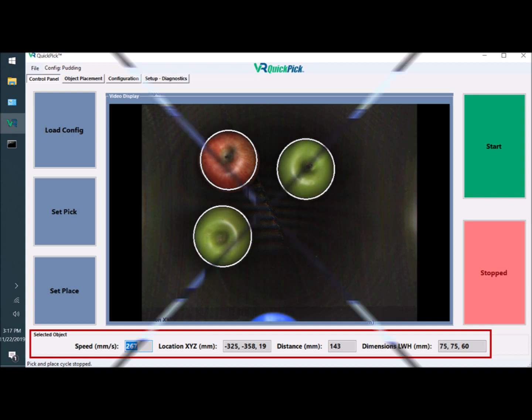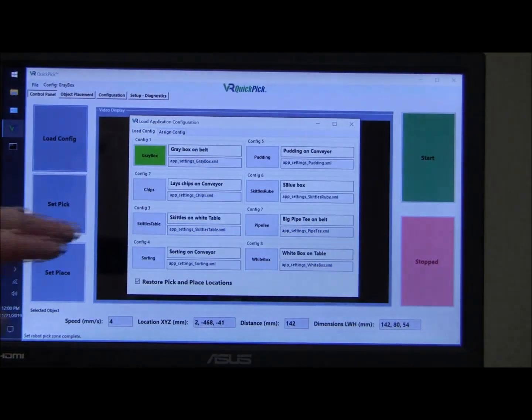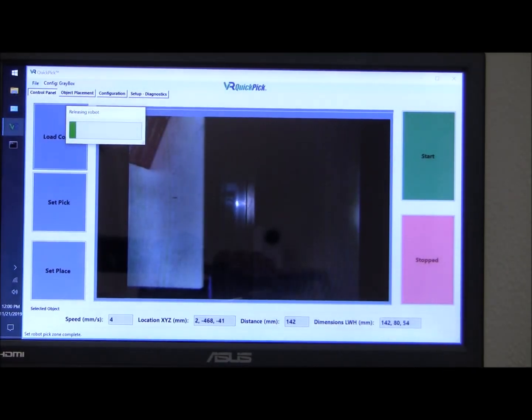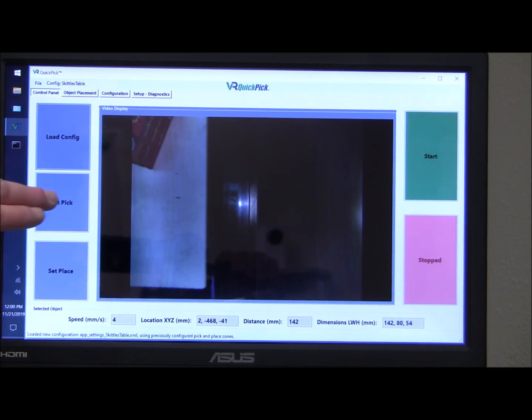So now let's see the system put to work. As we've described, first we'll load a configuration file, bringing in camera software and robot settings. Then we'll set the pick zone.